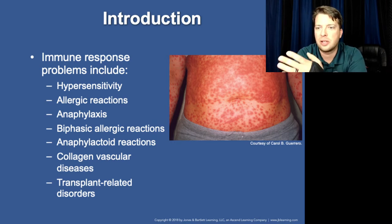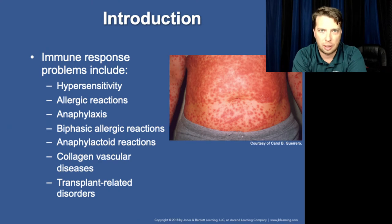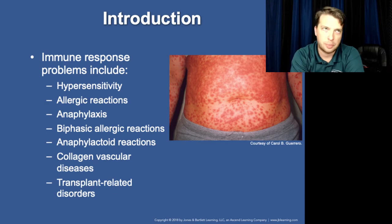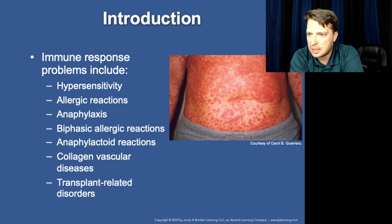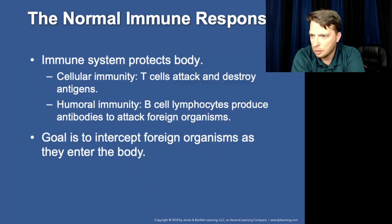The most common and most dangerous condition we'd have to be concerned about in this chapter is anaphylactic reactions. We'll also look at allergic reactions, anaphylactoid reactions, and some autoimmune disorders like lupus. So these give you the range of what we're going to be looking at — hypersensitivity, allergic, anaphylactic, biphasic, anaphylactoid, collagen vascular disease, that's like lupus, and then transplant-related disorders.